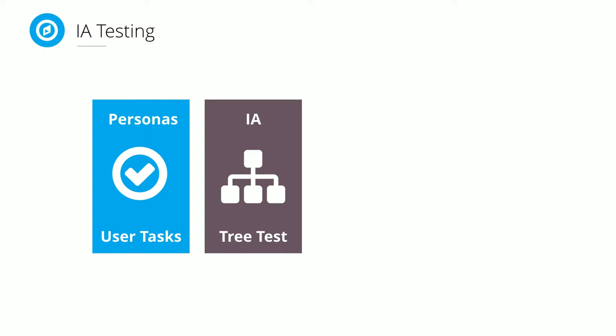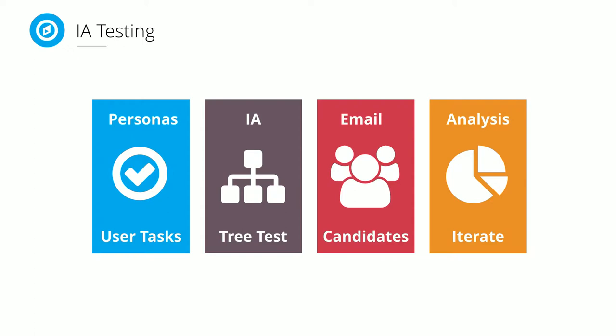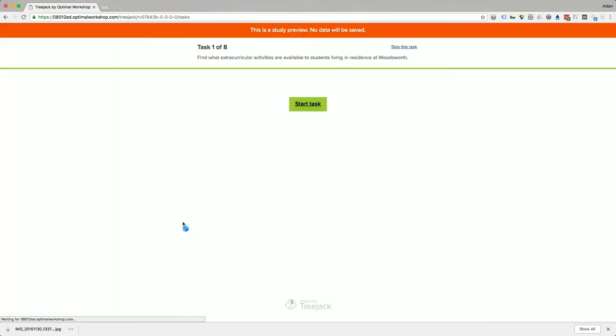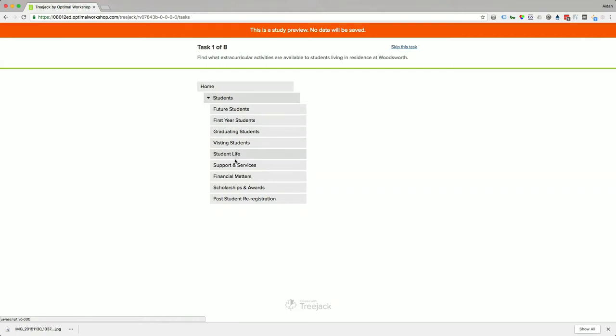Optimal Workshop basically creates an online survey where you're presented with a task and then the navigation structure, and you try to accomplish the task by clicking through it — tracking absolutely everything you do. We emailed this survey out to a few hundred students and alumni, and upon completion we have amazing analytics showing how well our information architecture actually works with our audience.